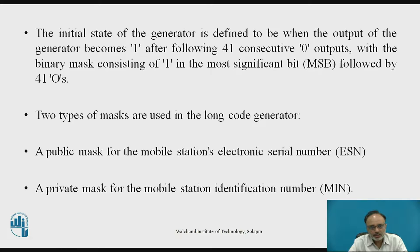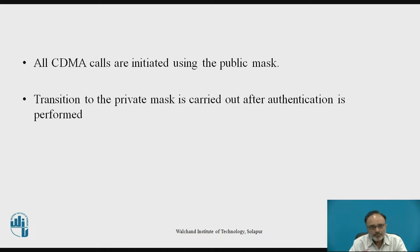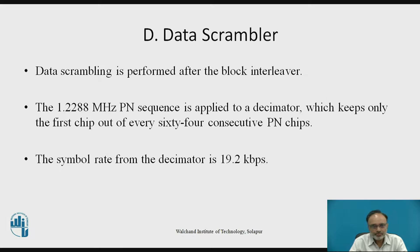Two types of masks are used in the long code generator: a public mask and a private mask. One is used for the Mobile Station Electronic Serial Number (ESN) and one is used for the Mobile Identification Number (MIN). All CDMA channels are initiated using the public mask. The transition to the private mask is carried out after authentication is performed. Data scrambling is performed after the block interleaver, with a PN sequence at frequency 1.2288 MCPS applied to the decimator, which keeps only the first chip out of every 64 consecutive PN chips. The symbol rate for the decimator is defined as 19.2 KBPS.